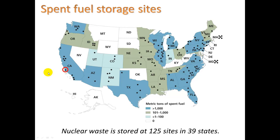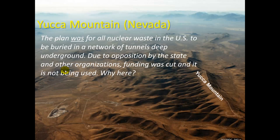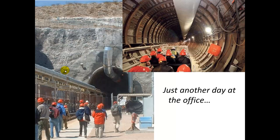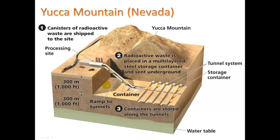There was an idea to store nuclear waste in Nevada in a buried network of tunnels. The tunnel was built — you can see people going into it to work on it. The plan was to bring materials in by train, take them down through the tunnel, and bury them deep in the ground. However, the state of Nevada was not in favor of it; it was more the federal government pushing it. Eventually they stopped funding it and the project stopped.